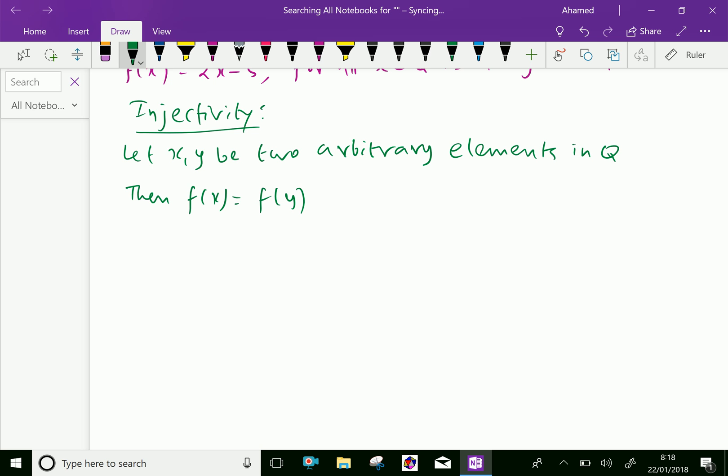This is given as 2x - 5 = 2y - 5, which gives further 2x - 5 and -5 cancel out, and we can see x = y. For all x, y ∈ Q.